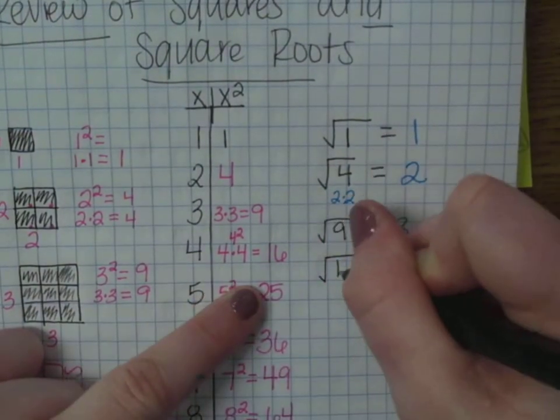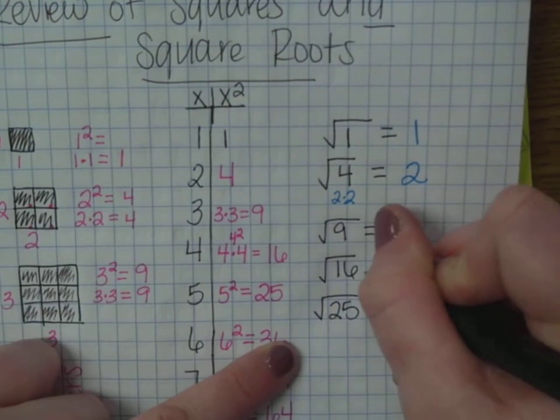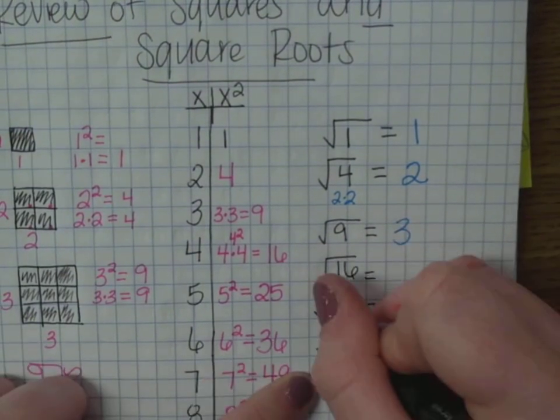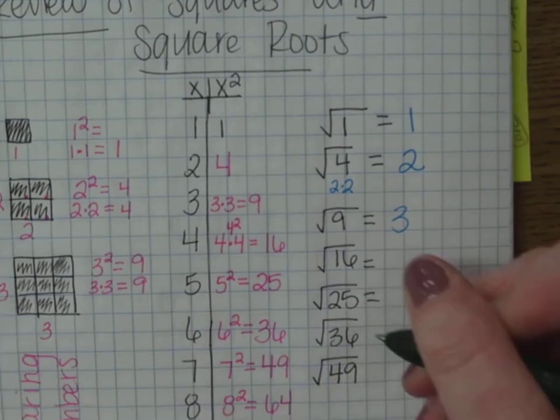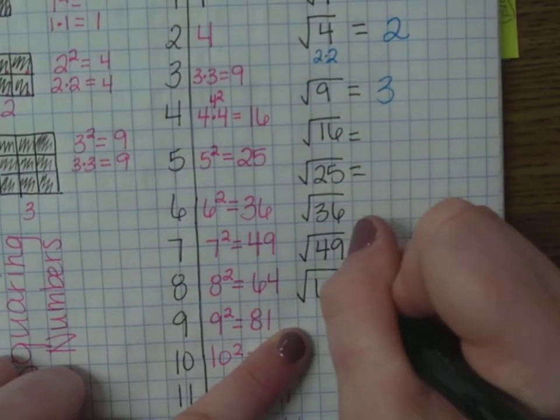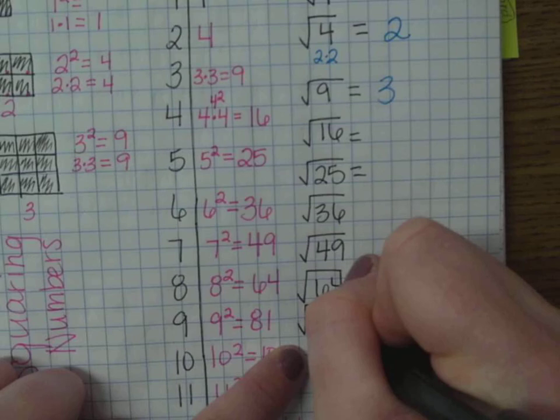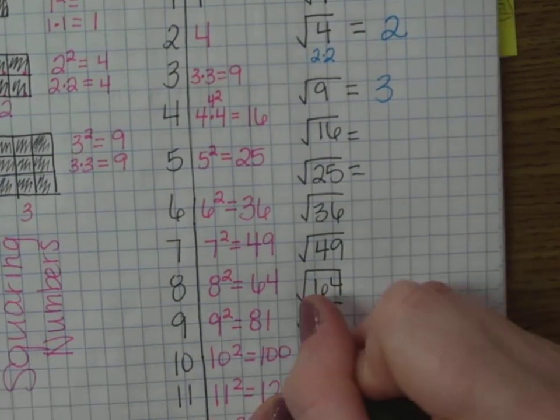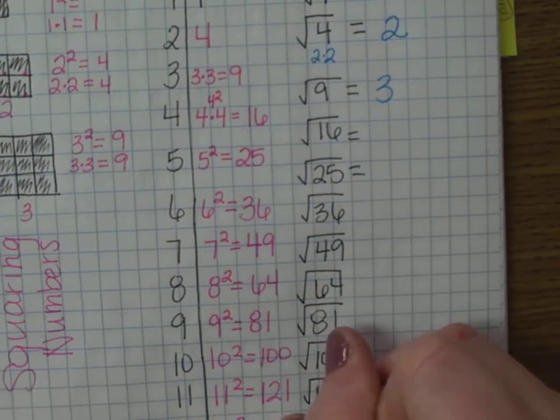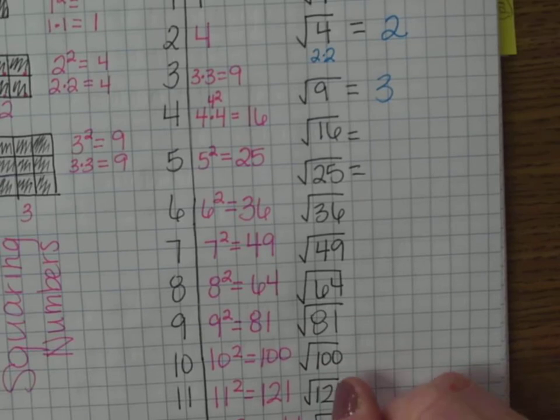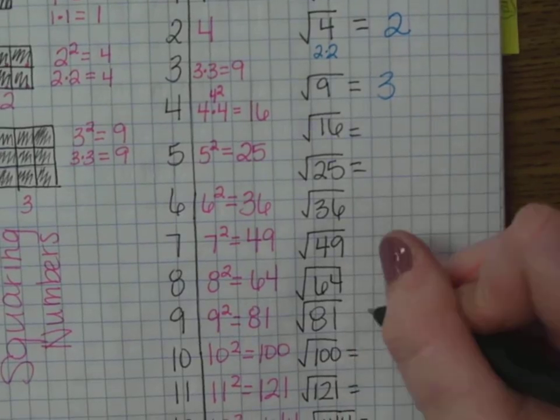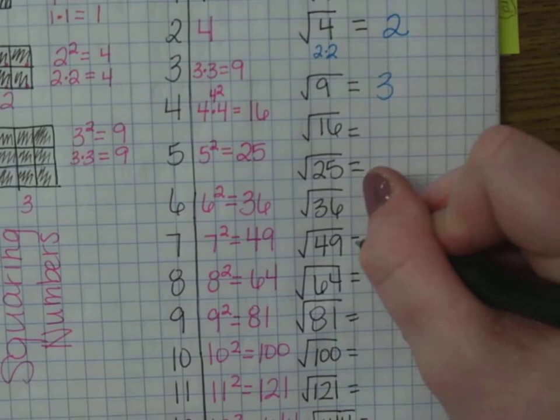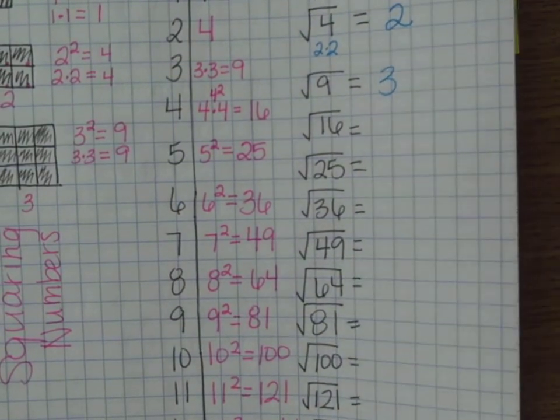So, square root of 16, square root of 25, square root of 36, square root of 49, square root of 64, square root of 81, square root of 100, square root of 121, square root of 144, and you're about to hear people there standing at my door. The bell rang, and they're coming to class, but I'm almost done.